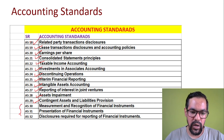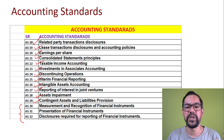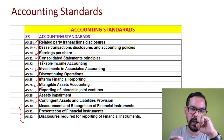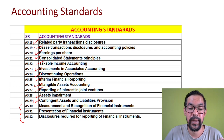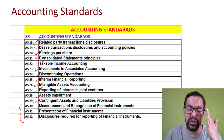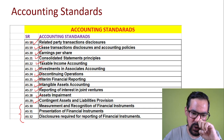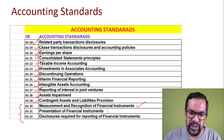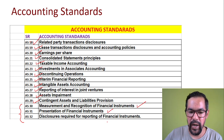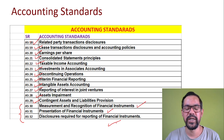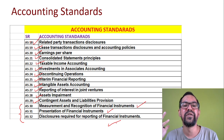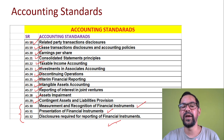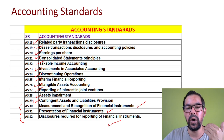Accounting Standards 30, 31, and 32 are generally optional. So when you look up the list of accounting standards you may find only 29 mandatory ones, but we have a total of 32. These three are optional in nature: AS 30 is Measurement and Recognition of Financial Instruments, AS 31 is Presentation of Financial Instruments, and AS 32 is Disclosure Required for Reporting of Financial Instruments — covering investments made in stocks, equities, and other areas.